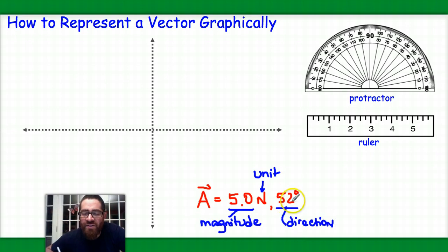And then finally, there is a direction associated with this quantity. So this last piece, the direction, in this case 52 degrees, is the one thing that sets vectors apart from scalars.